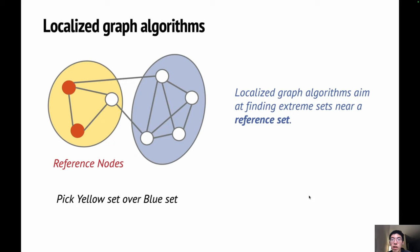Here, for example, say we are looking for the densest subgraphs and we set orange nodes as the reference set. In this case, we will pick the yellow set over the global optimum, the blue set, as it is closer to the reference set. As a result, more local information is revealed.